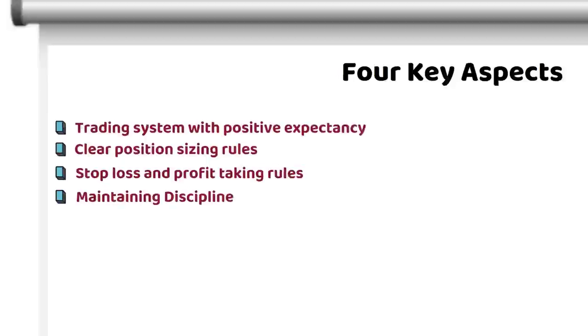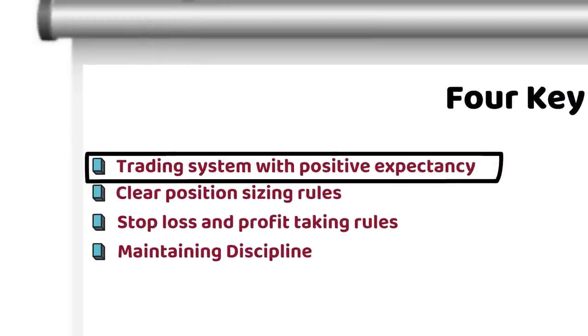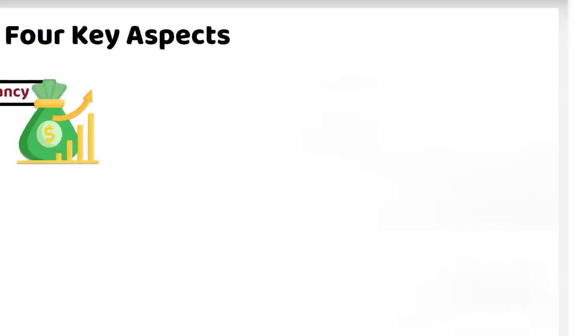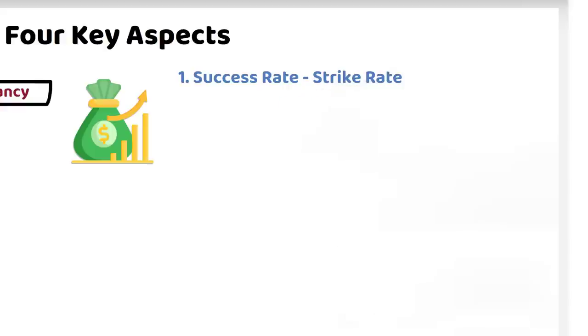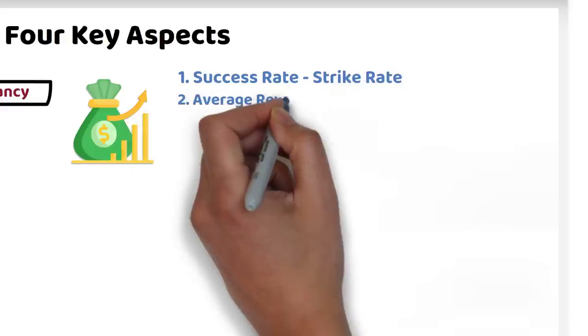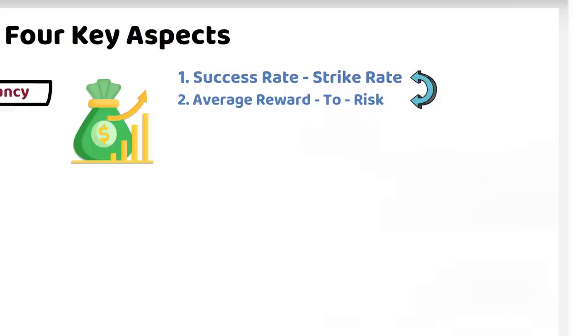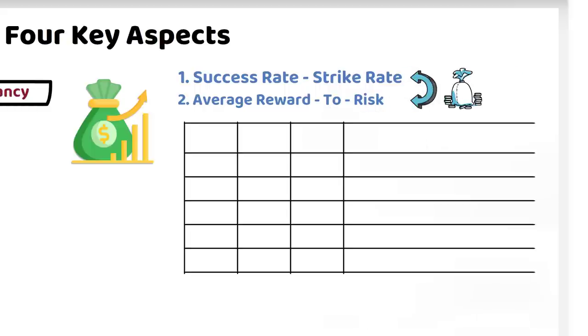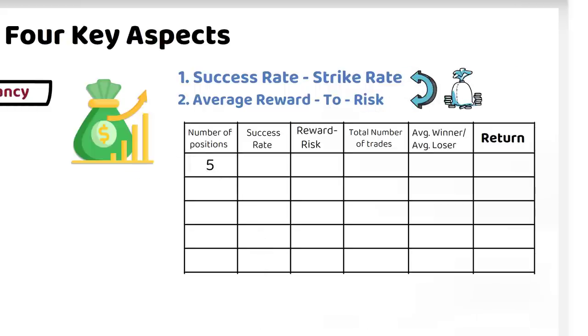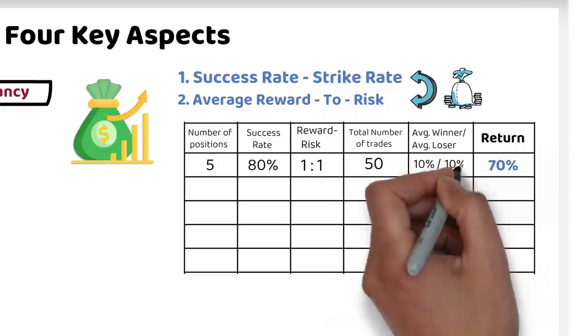Let's elaborate on these aspects, starting with a trading system with positive expectancy. A profitable trading system is built on two key parameters. Firstly, the success rate or strike rate. And secondly, the average reward to risk. There can be numerous permutations and combinations of these two parameters for profitable trading. For example, if you take five positions in a trading system that has an 80% success rate and a reward to risk ratio of one, you can achieve a return of over 70% on your account when you eventually make 50 trades, even if you lose 10% on a losing trade and win the same 10% on the winning trade.